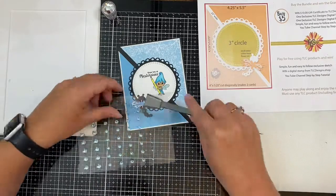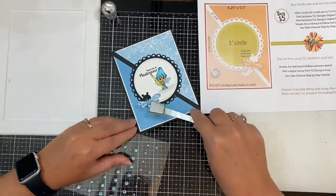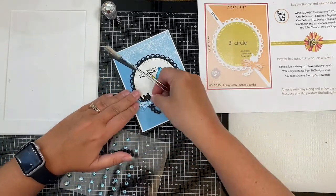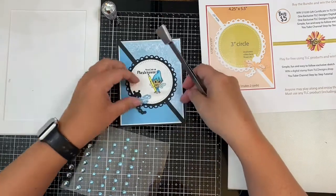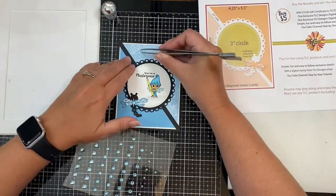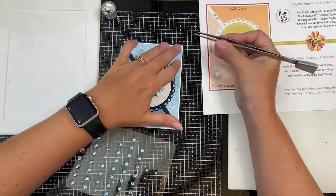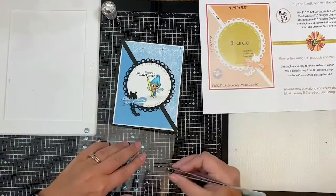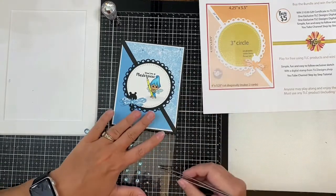And then of course I wanted to add a little bit of sparkle so I decided to add some Clear Wink of Stella to his wings.